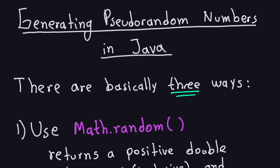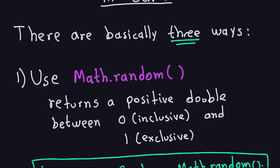The first way to generate random numbers is to use Math.random(). This will actually generate a positive double — a decimal that will only be between 0 and 1, where 0 is inclusive and 1 is exclusive. This method could possibly generate the number 0, but it will not generate the number 1.